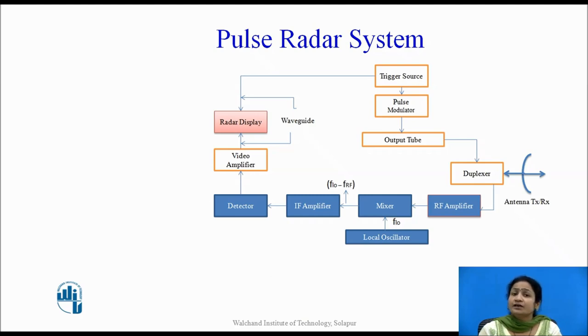The output of the diode is given to the video amplifier, which amplifies the signals and feeds them to the radar display. The interconnections of all these devices are made by waveguides.